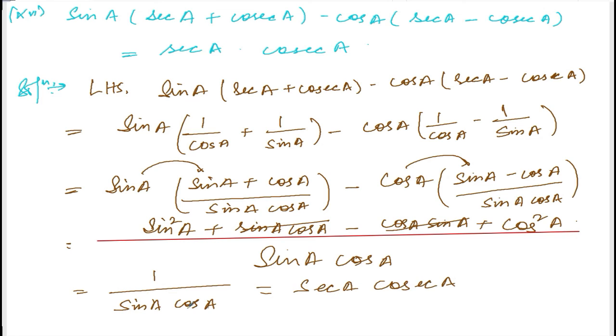Okay, 1 divided by cos A is sec A. For cos A, it is sec A. Fine. Which is equal to right hand side. And this is hence proved.